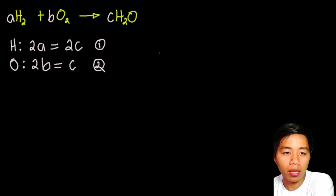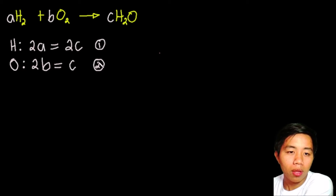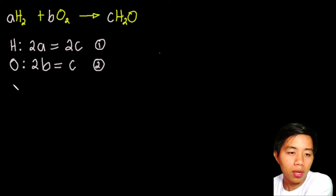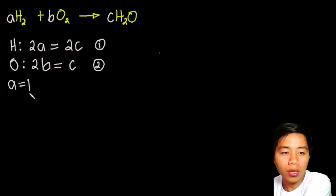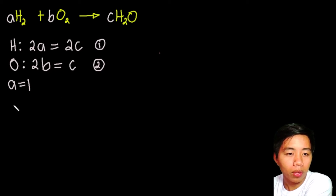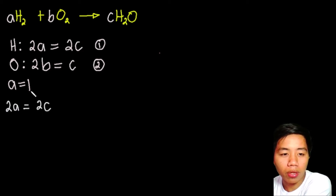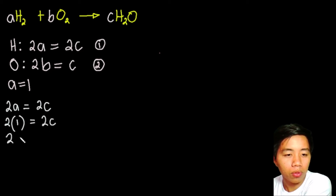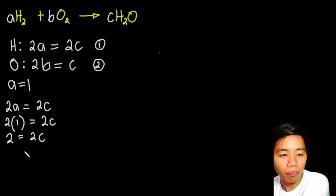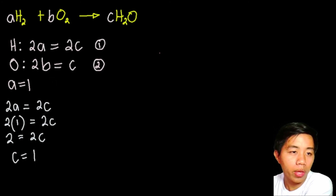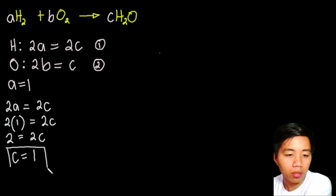The next step after creating the equations is to pick one of the letter coefficients — A, B, or C — and equate it to 1. For this example, let's choose A. Let's say A equals 1. Using equation 1, we rewrite it as 2A equals 2C. We know A equals 1, so we substitute: 2 times 1 equals 2C, giving us 2 equals 2C. Dividing both sides by 2, we get C equals 1.